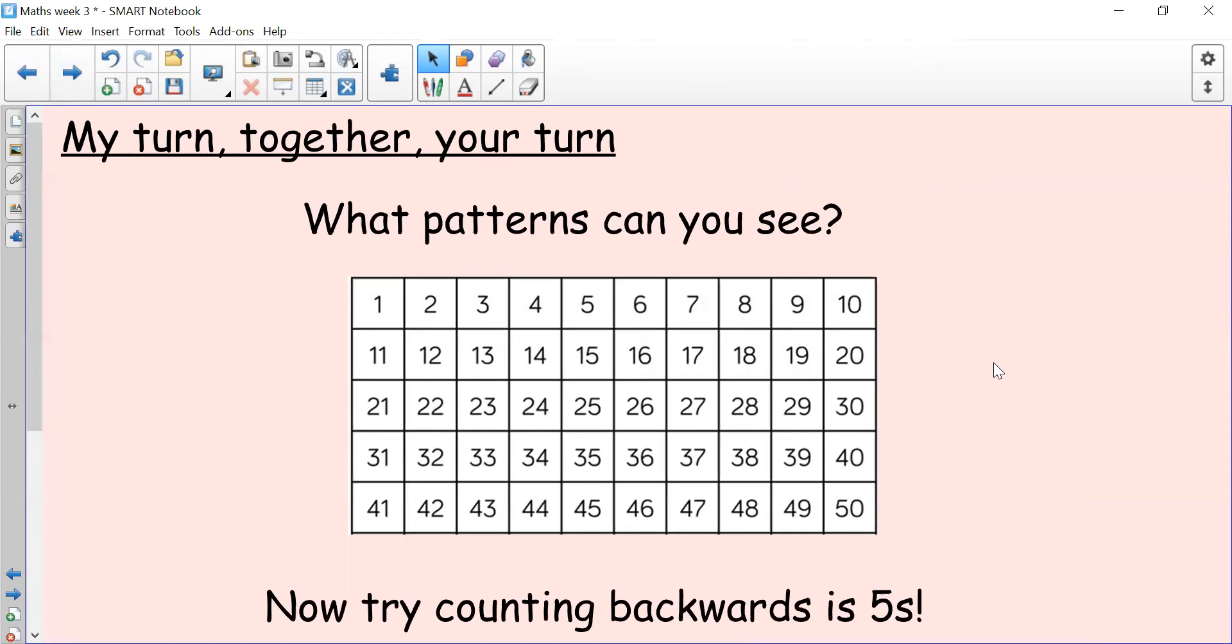Okay, let's have a look at this section of 100 square. So this goes up to 50. We're going to see if we can notice a pattern when we count in fives. So I'm going to circle the first few numbers and then I'm going to ask your help. So when I count in fives, the first number I say is five. And five more is ten. Five more, fifteen. Five more, twenty. Okay, what's going to be the next number if I add five more? That's right, twenty-five. And next, thirty. Thirty-five. Can you pause here and work out what the next three numbers are going to be?